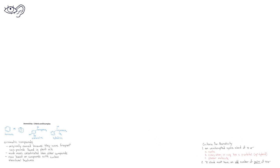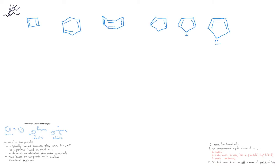Let's look at some examples and try to determine if these molecules are aromatic or not. In the first molecule, we have cyclobutadiene with alternating single and double bonds in essentially a square. While all the carbons are sp2 hybridized and it is a cyclic molecule, we have a total of 4 pi electrons, or 2 pairs of pi electrons. Since 2 is an even number, cyclobutadiene would not be aromatic.